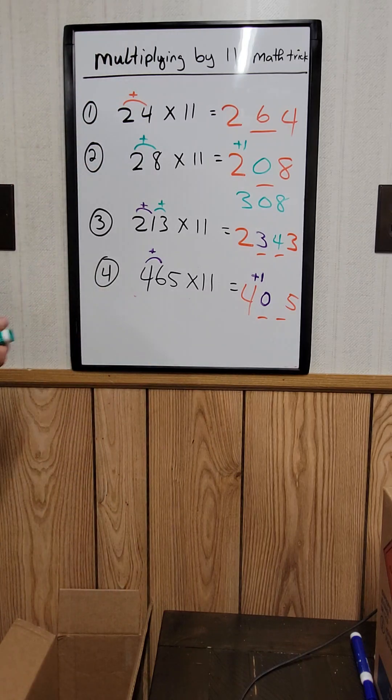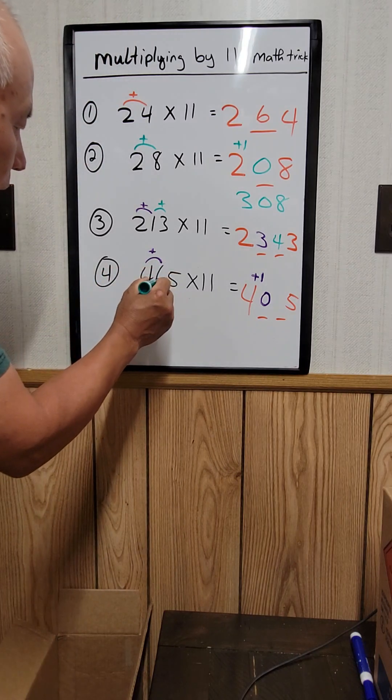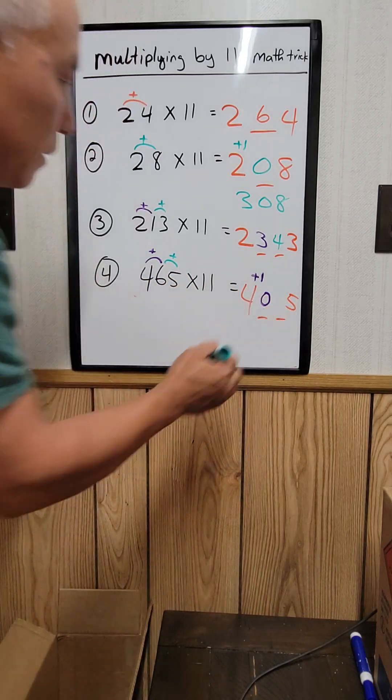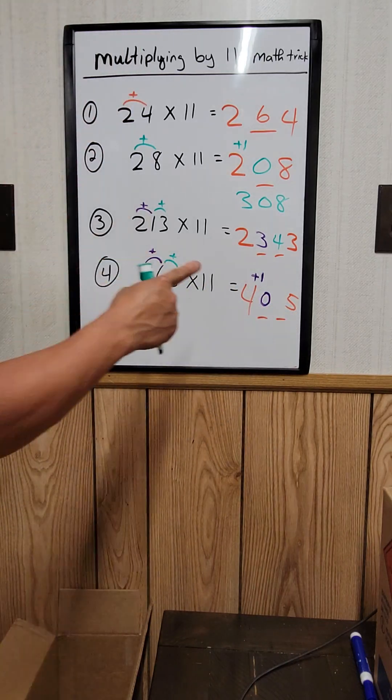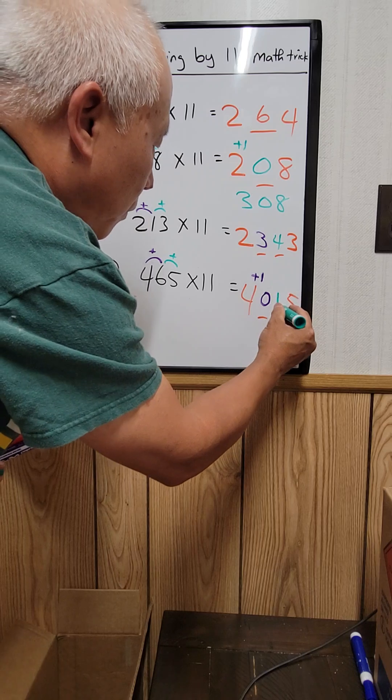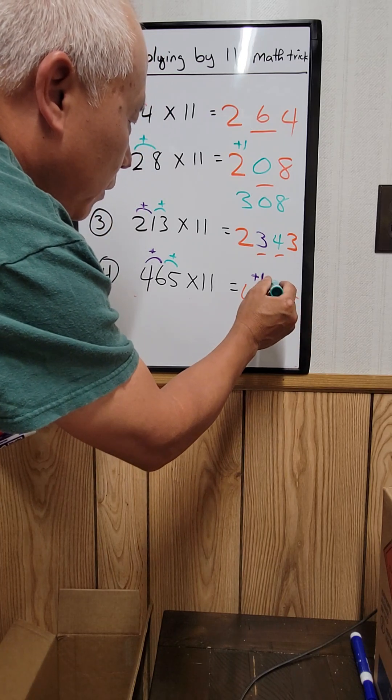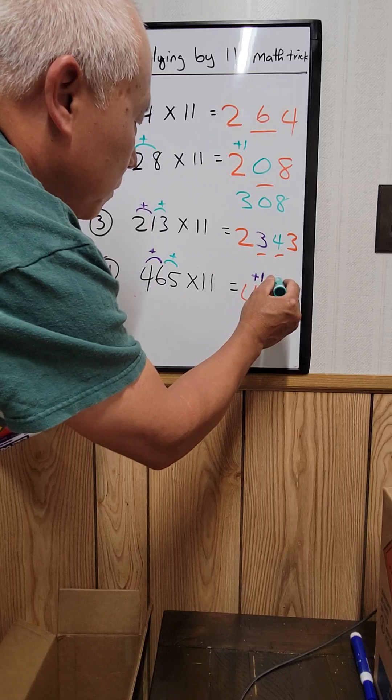And now do the same thing right here. 6 plus 5 is equal to 11. 11. You can only have one digit in the middle. So you write 1 right here. And then you have to carry over the other one. So you plus with the 0 right here. Okay.